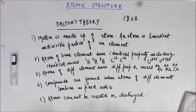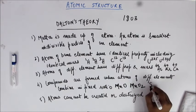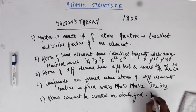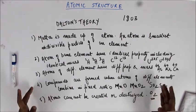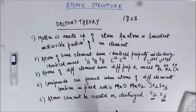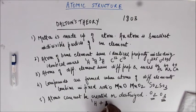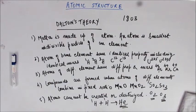'Compounds are formed when atoms combine in a fixed ratio' — this is also not always the case. For example, you have MnO and MnO₂, SO₂ and SO₃, and oxygen and ozone, where the same elements combine in different ratios. So statement four is also wrong. 'Atoms cannot be created or destroyed' — this is also wrong. In nuclear fusion in the Sun, hydrogen atoms combine to give helium atoms — helium is created and hydrogen is destroyed. In any nuclear fusion or fission reaction, atoms are created and destroyed.